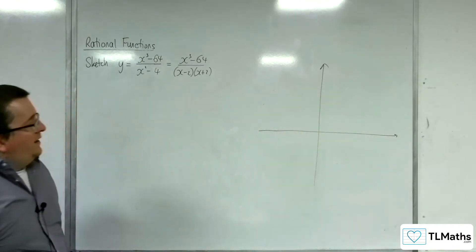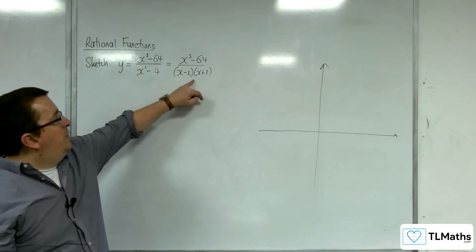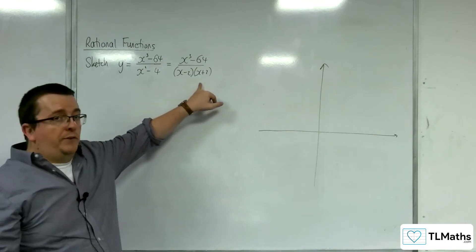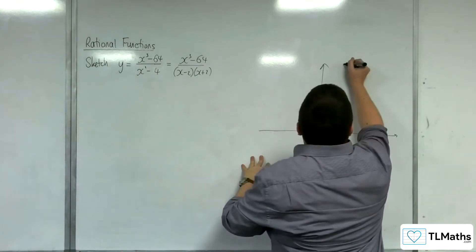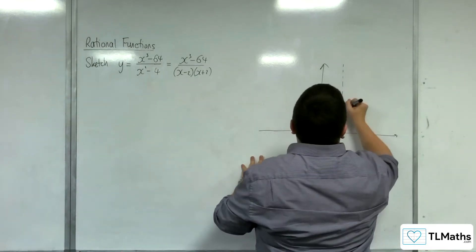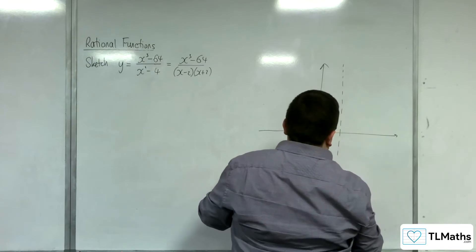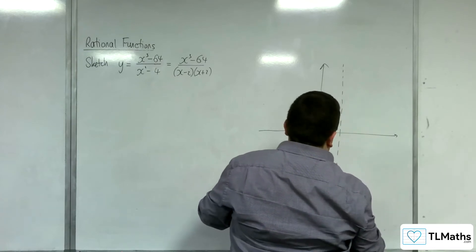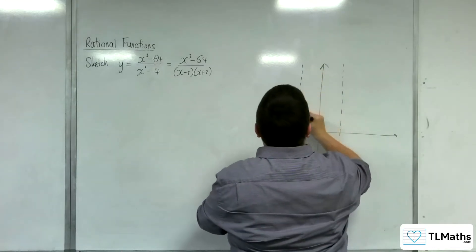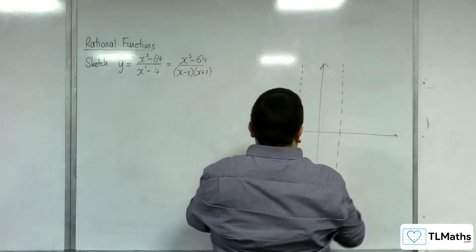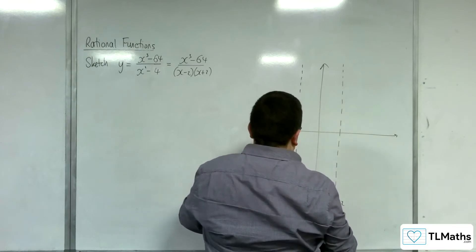Vertical asymptotes exist when the denominator is 0, so that's at x equals 2 and x equals minus 2.